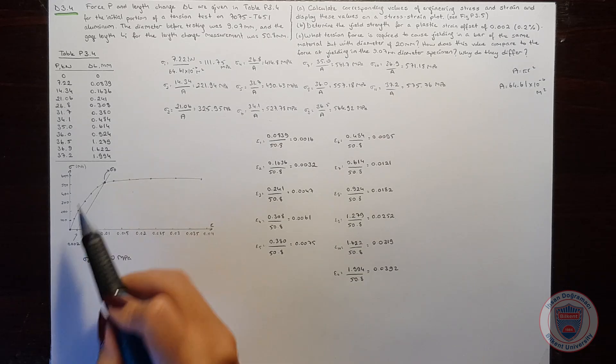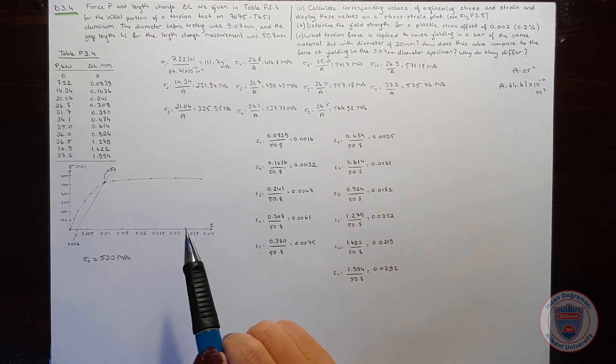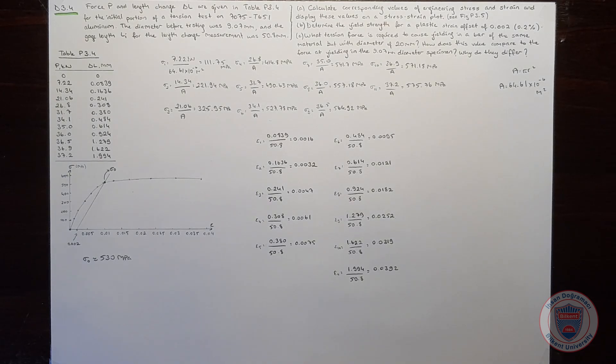Because it comes later than sigma 6, which is 527.78 and it is smaller than sigma 7, so it is approximately 530 MPa.